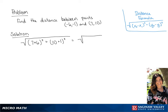If we simplify this, we're going to get the square root of 169 plus 121. Our final answer is going to be the square root of 290, which is approximately going to equal 17.029.